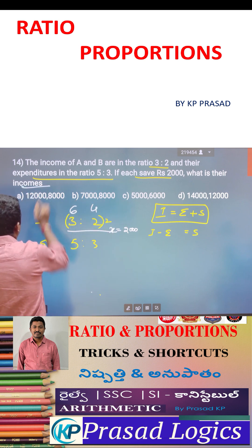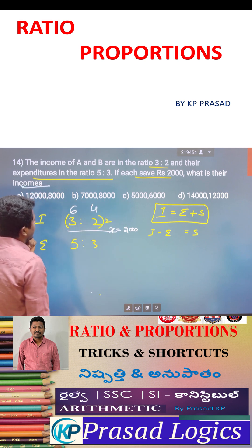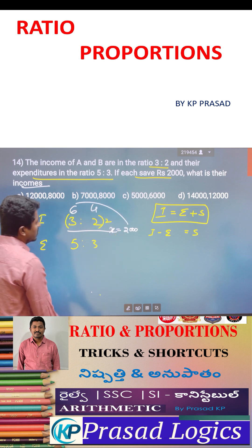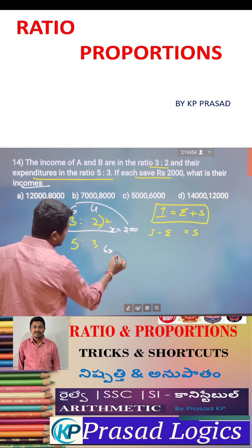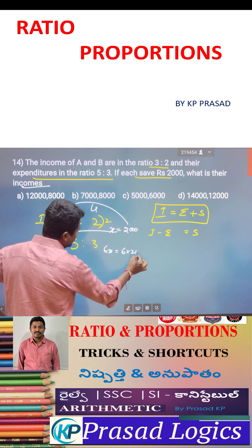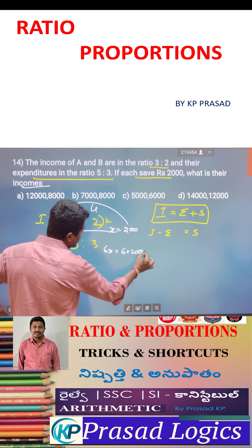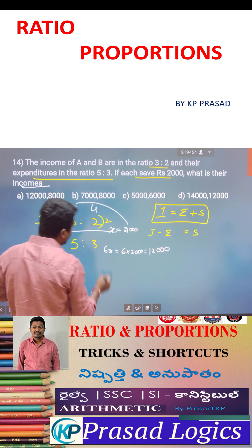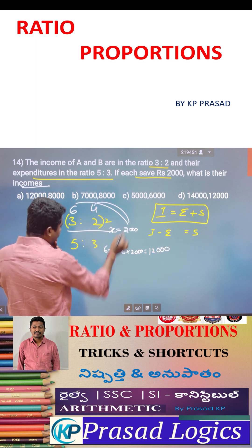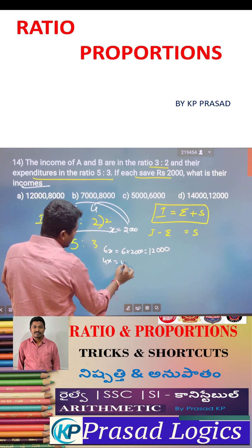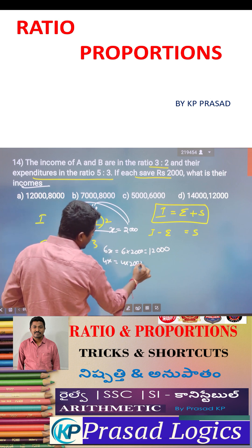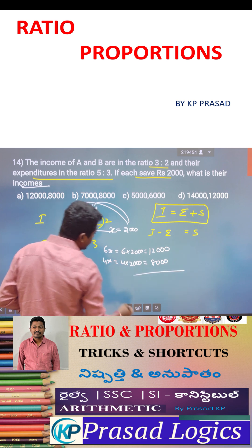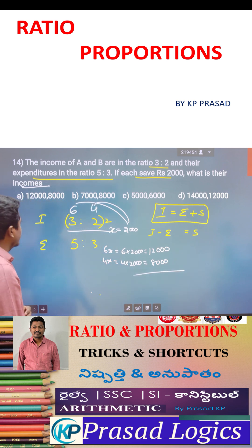What is their income? Income of A is equal to 6x. So 6 into 2,000 rupees is equal to 12,000 rupees. Then income of B is 4x, which means 4 into 2,000 rupees is equal to 8,000 rupees.